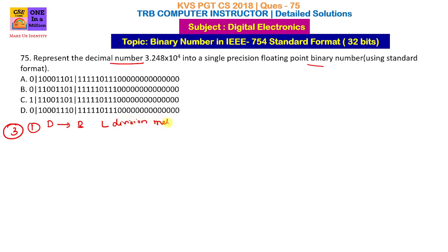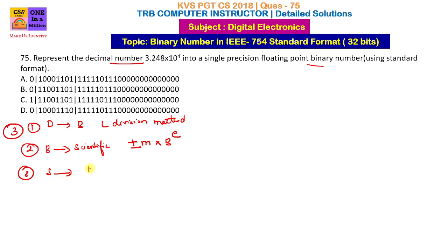Decimal to binary conversion using the L division method. The next step is to write the binary number in scientific notation. Scientific notation means plus or minus mantissa into base power exponent. The decimal number is 3.248 into 10 power 4.